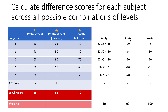You do that again for the other contrasts — A1 minus A3. 20 minus 40 is negative 20. 40 minus 40 is zero. 60 minus 70 is negative 10. 50 minus 60 is negative 10. 30 minus 50 is negative 20. Then you follow up with A2 minus A3: 35 minus 40 is negative 5, 50 minus 40 is 10, and so forth. These difference scores are clearly not equal to one another — they exhibit variability. So what we're going to do is compute the variance within the A1-A2 contrast, the A1-A3 contrast, and the A2-A3 contrast.